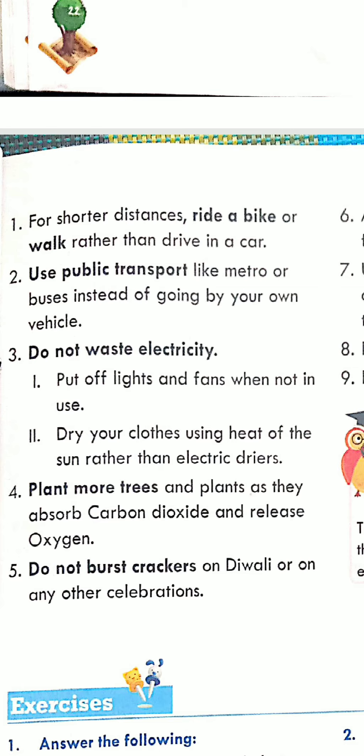The next one is: plant more trees and plants, as they absorb carbon dioxide and release oxygen. We also do this as a seva activity in school — plant more trees. Plants breathe in carbon dioxide and release oxygen, so they are absorbing carbon dioxide. If they absorb carbon dioxide, the air will be cleaner. Plants are very important to control air pollution, and that's why we need to plant as many trees as we can. If you don't have a big space, you can plant small plants in pots.